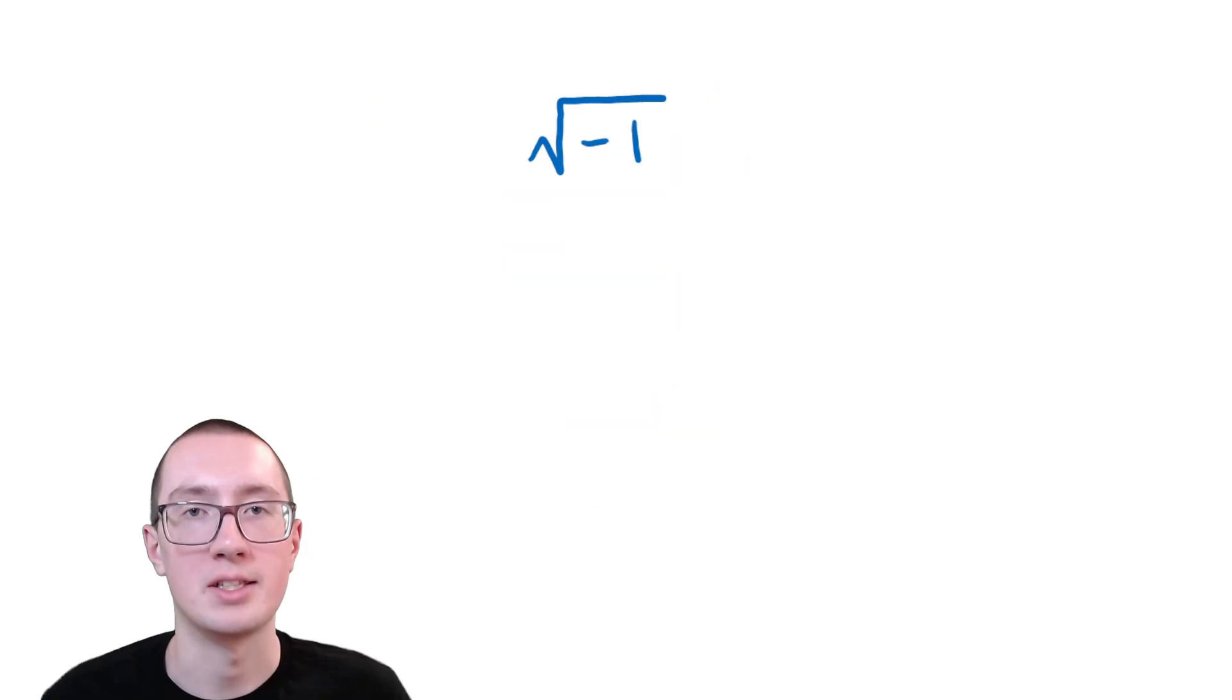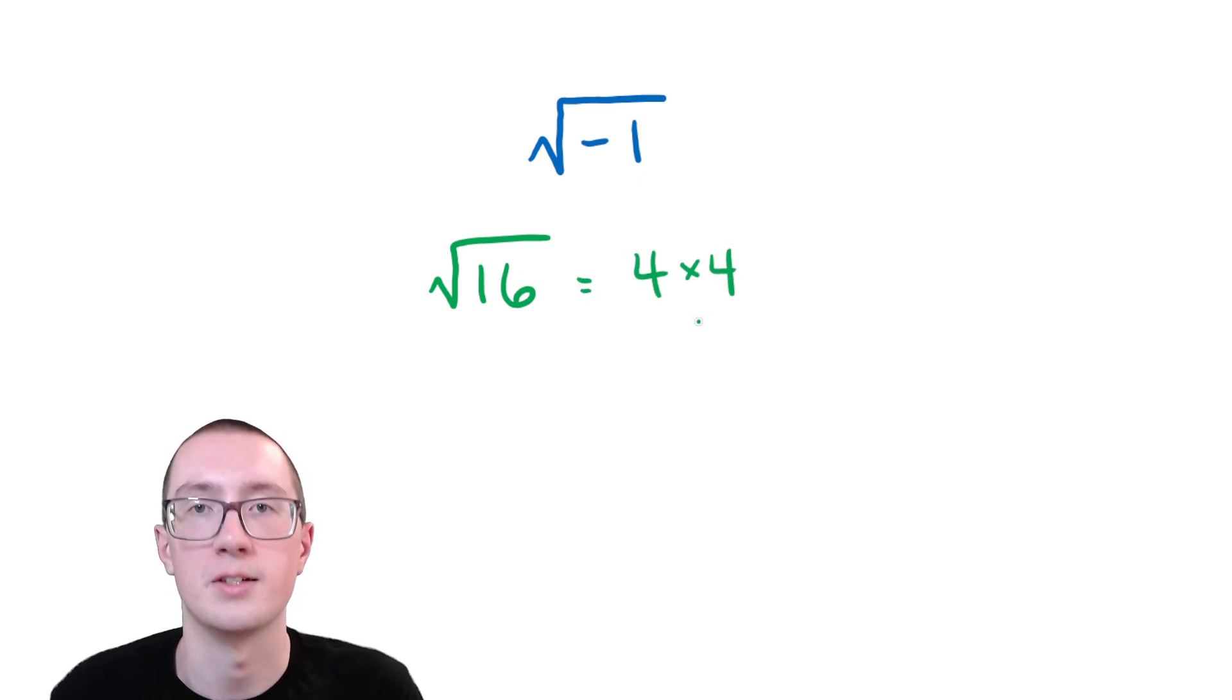So this is possibly going to be one of the weirdest things that you learn in algebra. Remember that a square root is basically just what number do you have to multiply twice to get a number? So like, for example, the square root of 16 is 4 because 4 times 4 is 16.